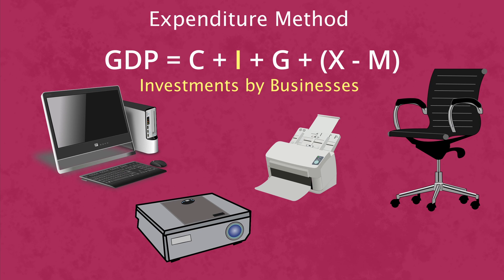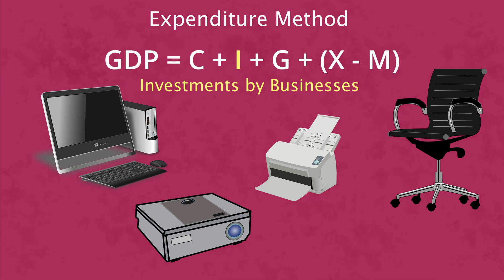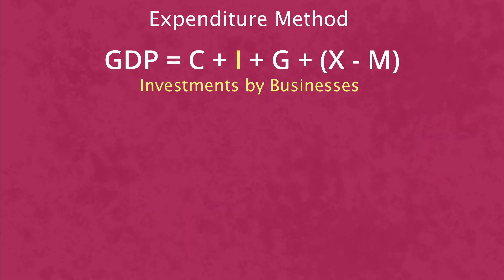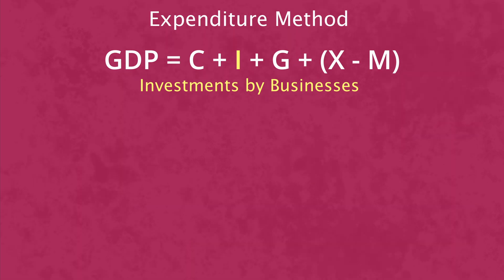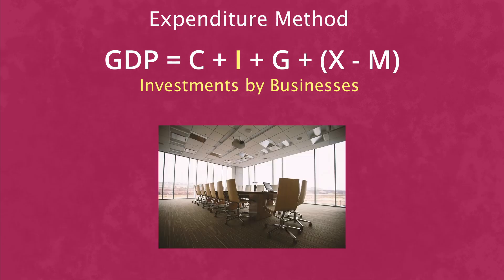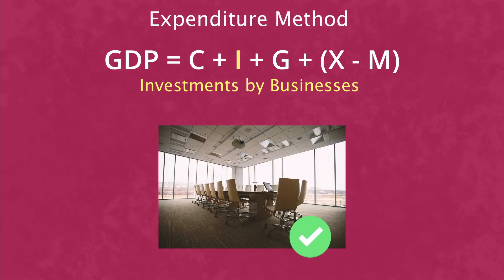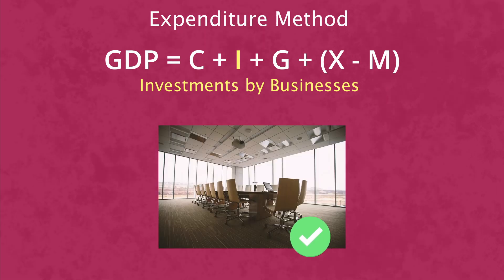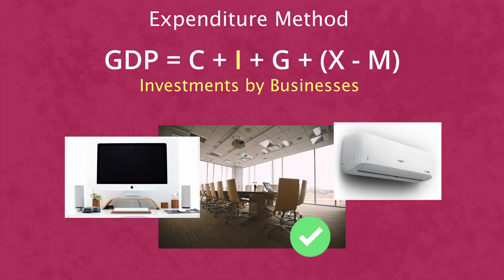I signifies the investments by businesses and private firms. For example, a business buying a new space for work will be calculated. Also, the machinery needed to run these businesses, like computers and air conditioning machines, will be counted.